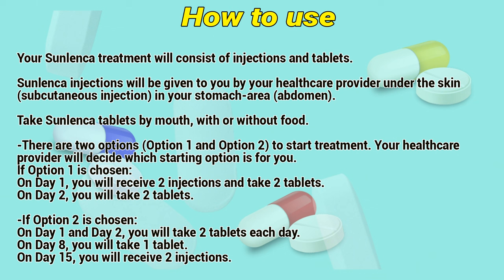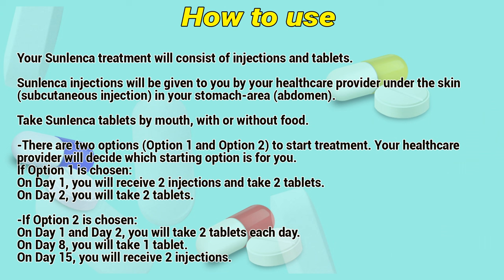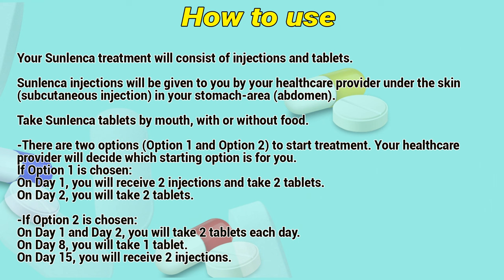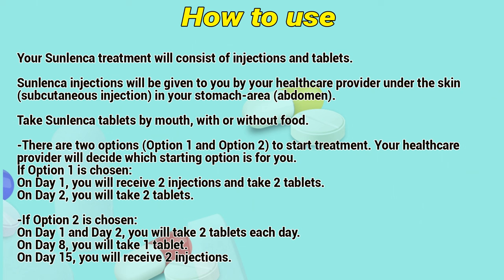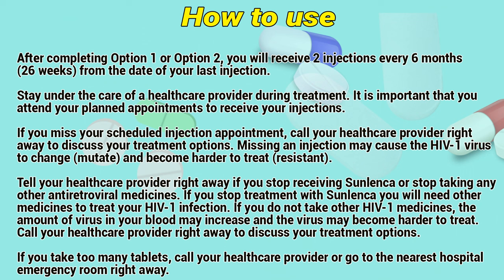There are two options to start treatment, and your healthcare provider will decide which starting option is right for you. If option 1 is chosen, on day 1 you will receive two injections and take two tablets; on day 2 you will take two tablets. If option 2 is chosen, on day 1 and day 2 you will take two tablets each day; on day 8 you will take one tablet; on day 15 you will receive two injections. After completing option 1 or option 2, you will receive two injections every 6 months — 26 weeks — from the date of your last injection.